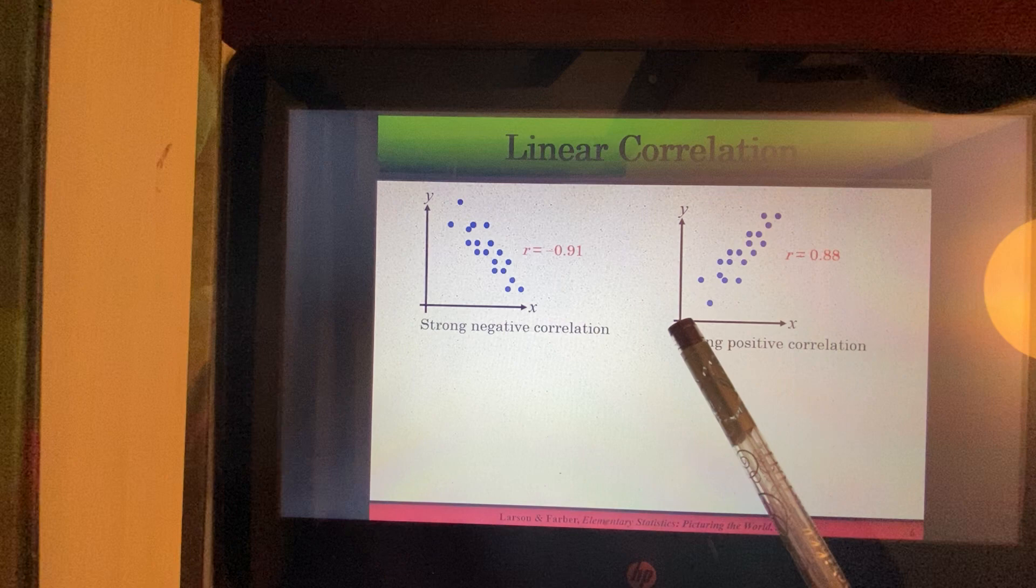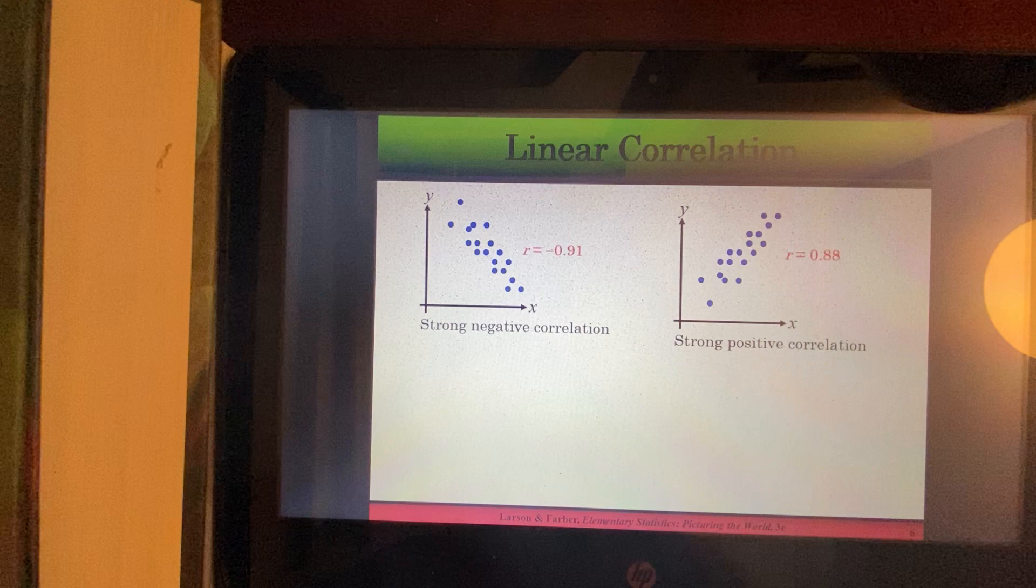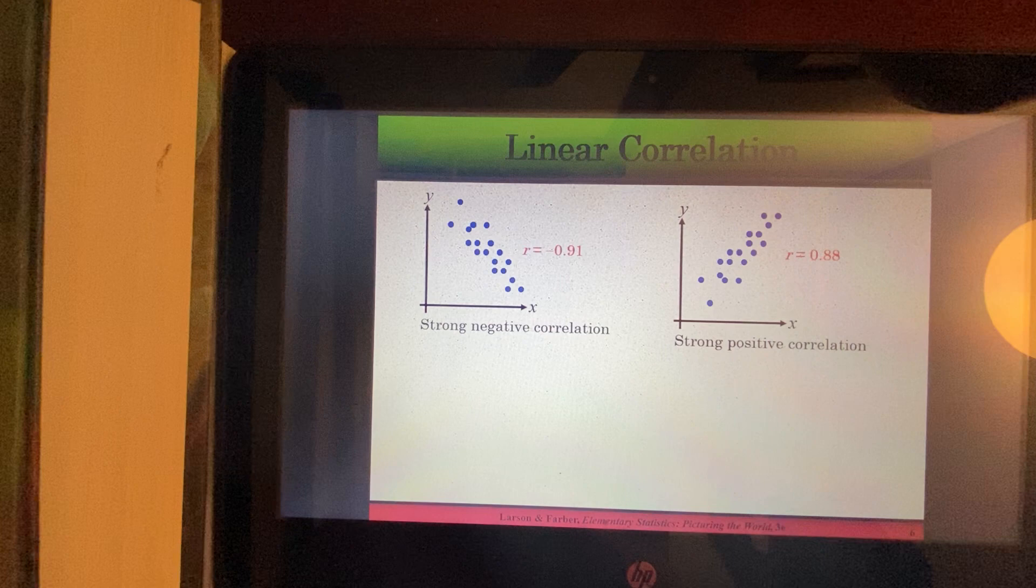Over here, if I was to draw a line through these points, it would have a positive slope. And the points would be pretty close to the line. This is representing an R value or a correlation coefficient of positive 0.88. Okay, so again, this is a strong positive correlation because your R is close to positive 1.